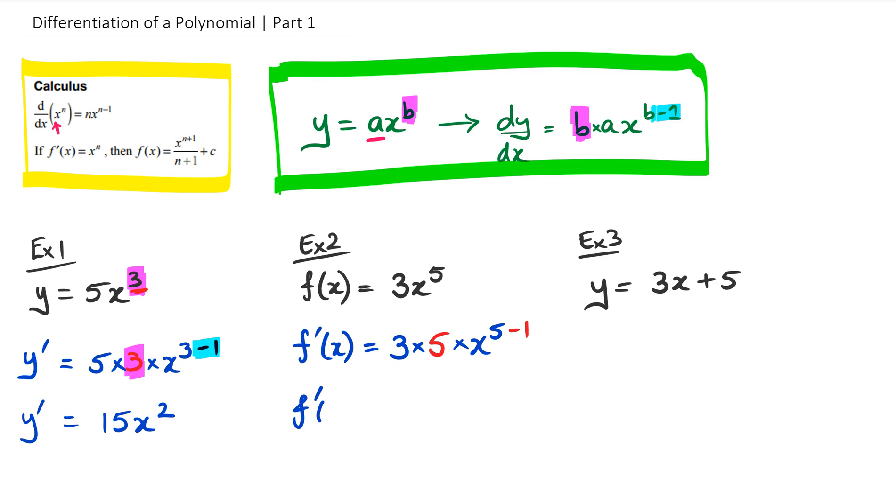So that means, simplifying it now, I've got f dash of x is equal to 3 times 5 is 15. And then I've got x to the power of 5, take away 1 is 4.